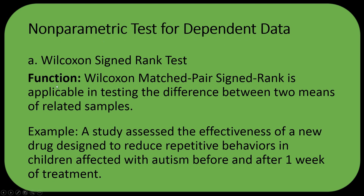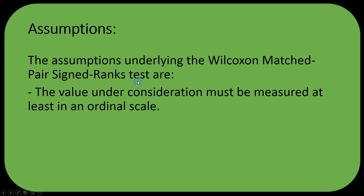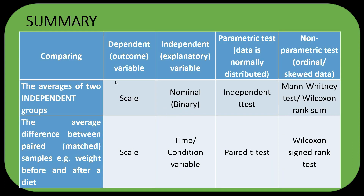If we do not satisfy those assumptions, we go to non-parametric tests for dependent data — the Wilcoxon signed rank test. The Wilcoxon matched pair signed rank test is applicable in testing the difference between two means or related samples. Example: a study assessed the effectiveness of a new drug designed to reduce repetitive behavior in children with autism, before and after one week of treatment. Assumptions: values must be measured at least on an ordinal scale, and the two samples must be related.